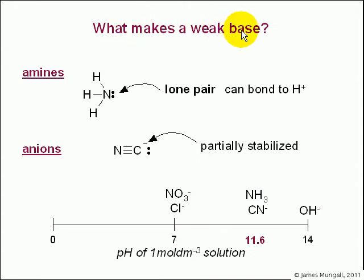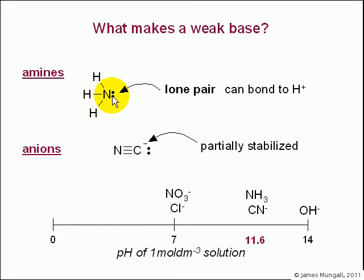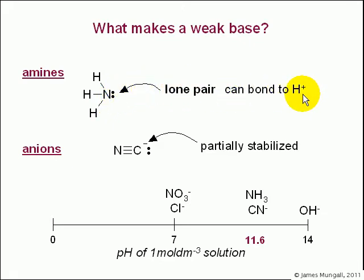So what makes a weak base? There are two types of things which are a bit different. One is an amine, and the other is partially stabilised anions. Amines have got nitrogen atoms in them, and those nitrogen atoms have got lone pairs. The lone pairs are not particularly tightly held — not as in oxygen, fluorine, or chlorine — because nitrogen isn't so electronegative. So that lone pair is more available to go and bond to H plus. Therefore this nitrogen atom is more basic than an oxygen atom or a chloride ion, so that is a weak base.